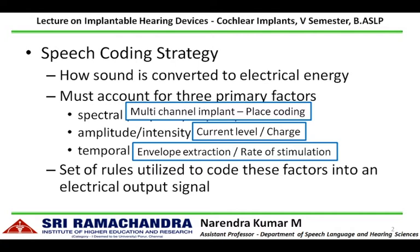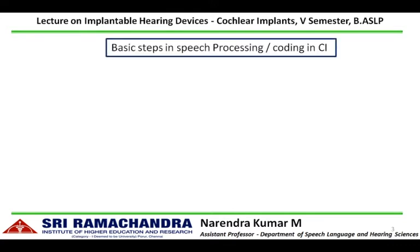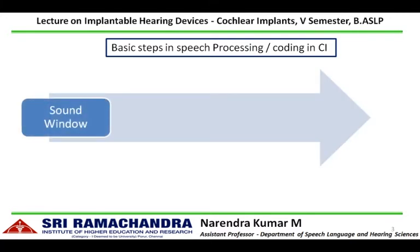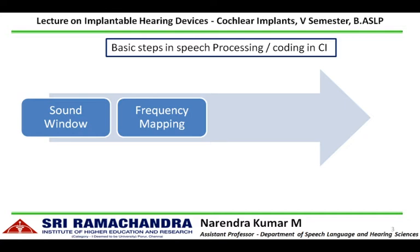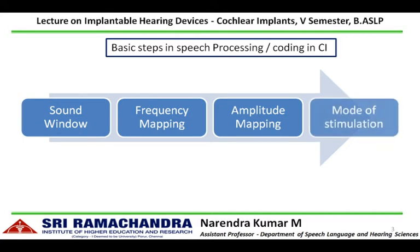The basic steps involved in speech processing in a cochlear implant start with a sound window, which determines what sounds need to be picked up and processed. Once selected, the sound window is subjected to frequency mapping, where the sound is split into different frequency components, followed by amplitude mapping — how the signal is represented in terms of its amplitude. Then the mode of stimulation determines how the processed information is delivered at the intracochlear electrode array to stimulate the auditory nerve fibers.